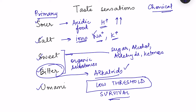Finally, there is umami taste. Umami is a Japanese word meaning 'pleasant taste,' and this taste is caused by foods containing a chemical compound known as L-glutamate.